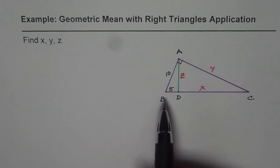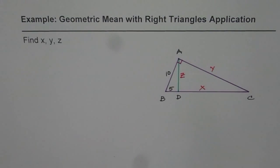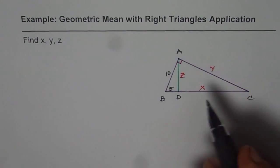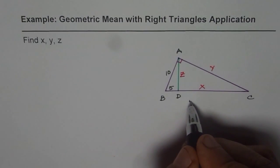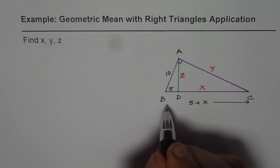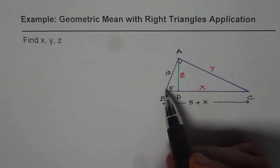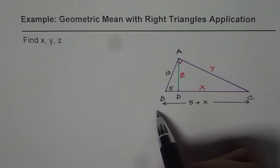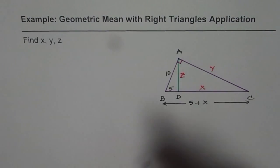In this triangle we are given that the hypotenuse BC is basically equal to 5 plus x. So 5 plus x is the hypotenuse of this particular triangle. We are given one of the legs and we need to find the altitude and the other side.